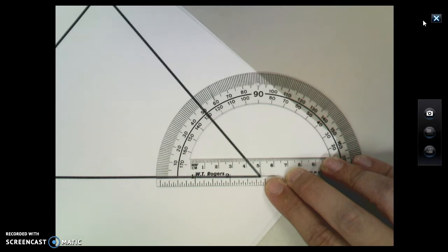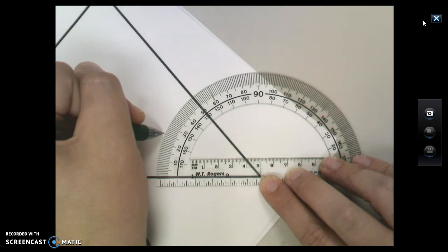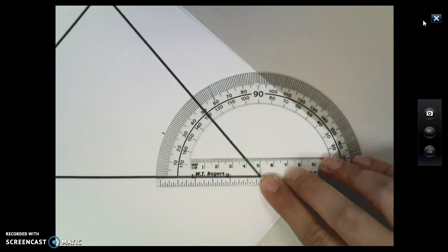The angle bisector, remember, cuts into two equal parts. So if my angle is 50, my angle bisector is going to cut it into two 25 degree angles. So at the 25 degree mark, I'm going to put a little bit of a dash there.